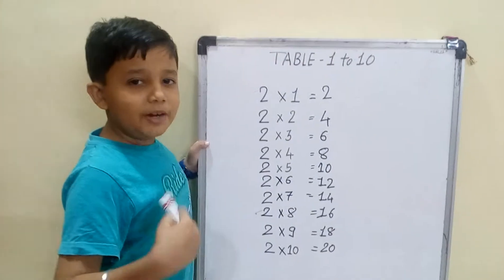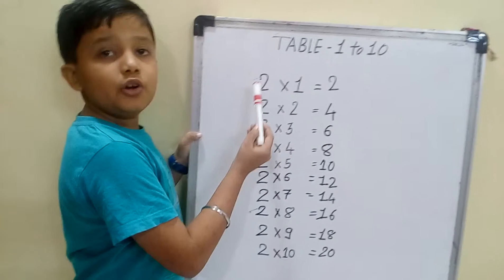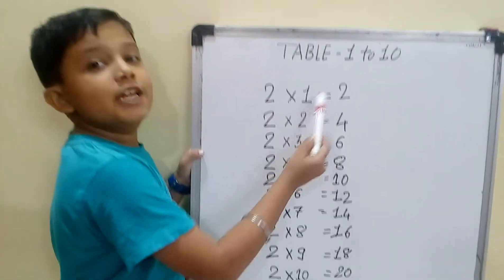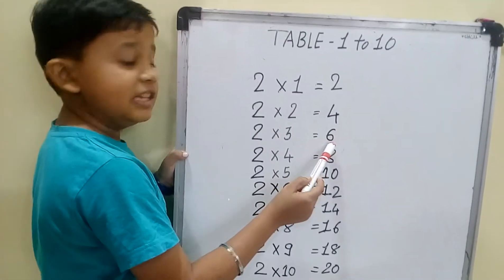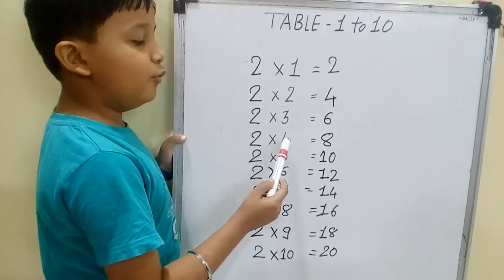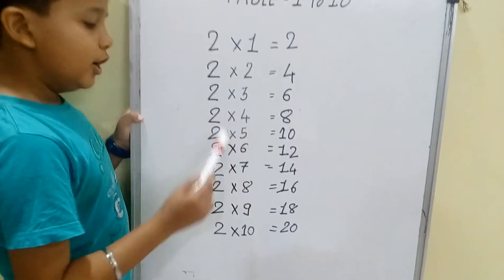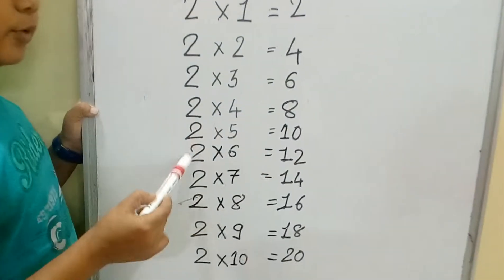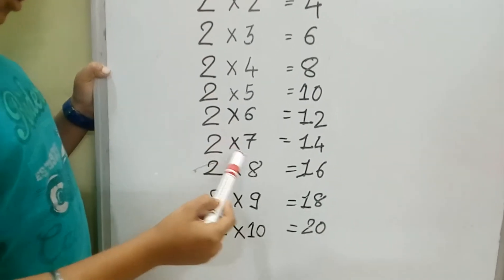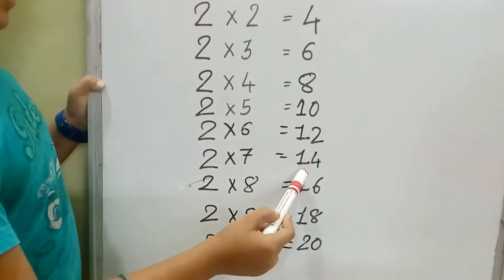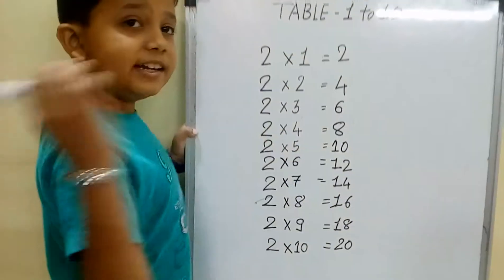Children, you repeat with me also. 2 one is 2, 2 two is 4, 2 three is 6, 2 four is 8, 2 five is 10, 2 six is 12, 2 seven is 14, 2 eight is 16, 2 nine is 18, 2 ten is 20.